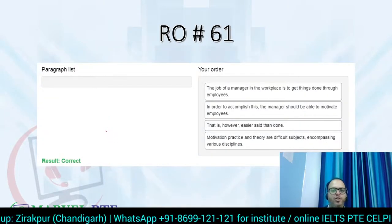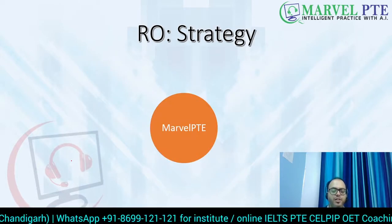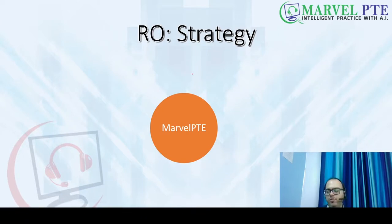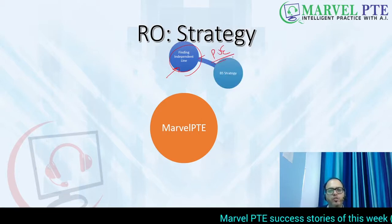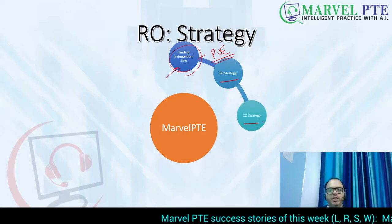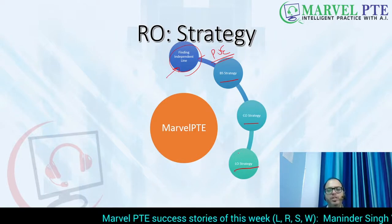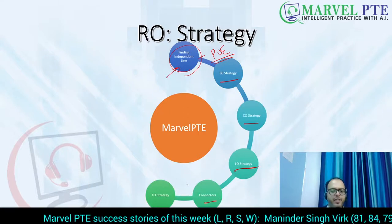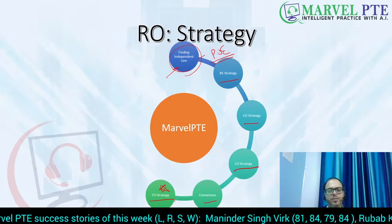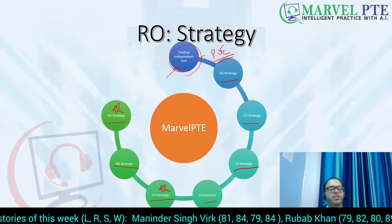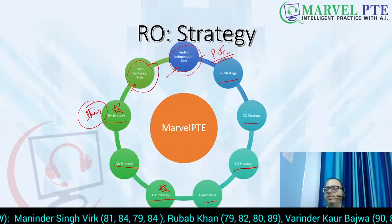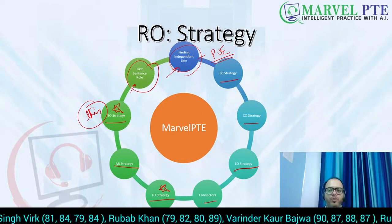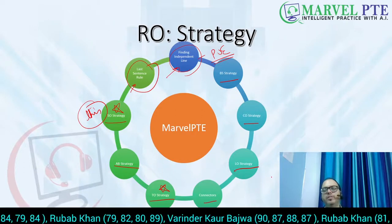All the answers are correct. So you see, if you know the right strategies and hacks, you can easily solve your reorder paragraphs. Our reorder paragraph strategies include: finding the independent line using rules and process of elimination, broad-to-specific strategy, CO strategy, chronological order strategy, LO strategy, logical order strategy, strategies regarding connectors, topical order strategy — as seen today — AB strategy (abbreviation strategy), SO strategy (subject-object strategy), and rules for the last sentence.